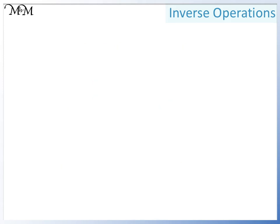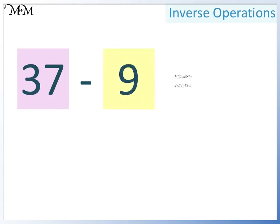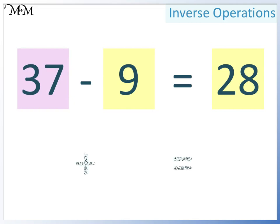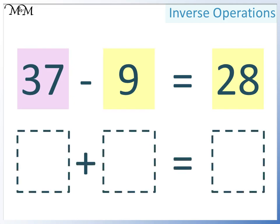Let's look at an example. 37 take away 9 equals 28. A larger number take away a smaller number leaves another smaller number. We want to change this into two addition calculations. To do this we don't need to calculate anything — we have already been given the numbers involved. We know that two smaller numbers add together to make a larger number. Our largest number is 37.